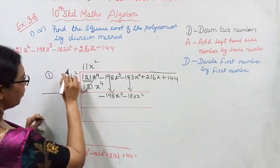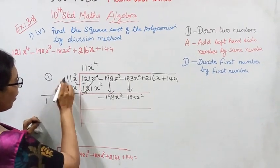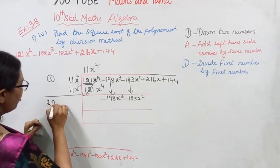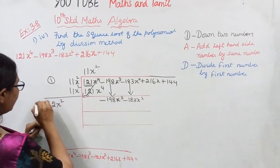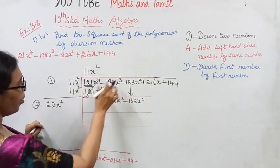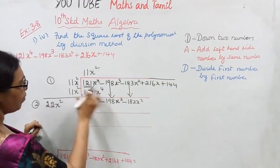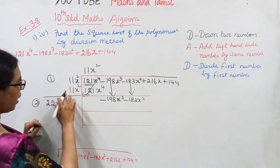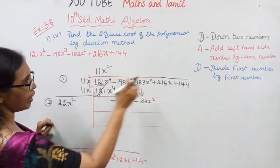Add it. 11 plus 11 is 22x². This is the second. First step, then the second. Down 2 numbers. Add left hand side number by same number: 11 plus 11 is 22x². Now divide first number by first number.